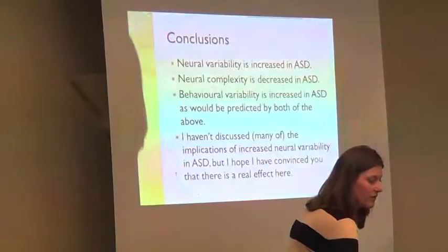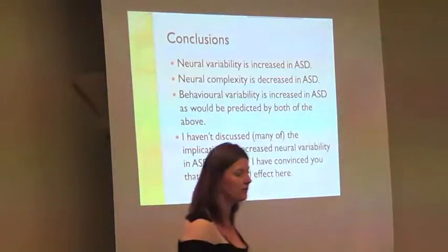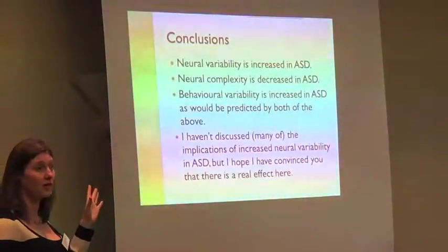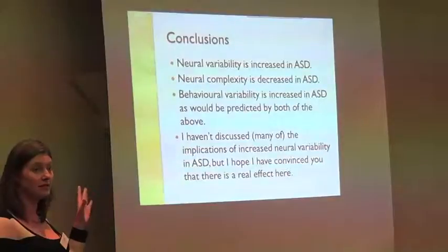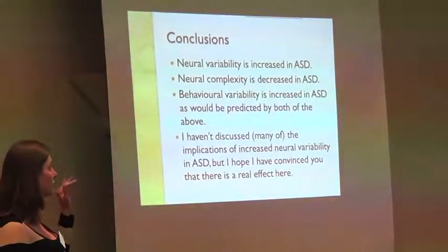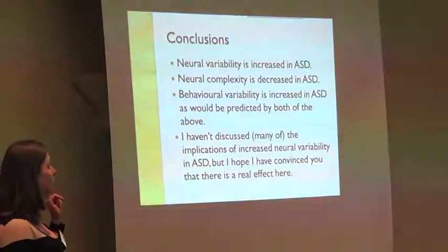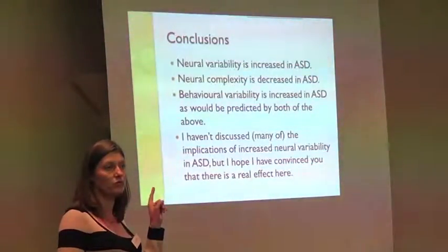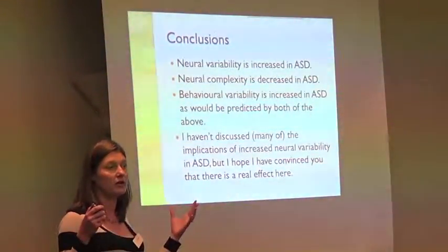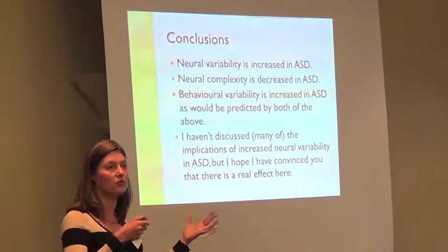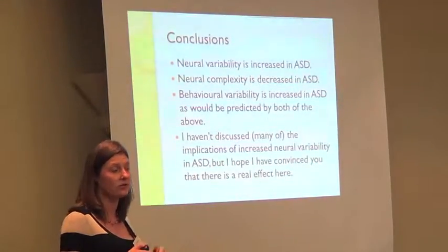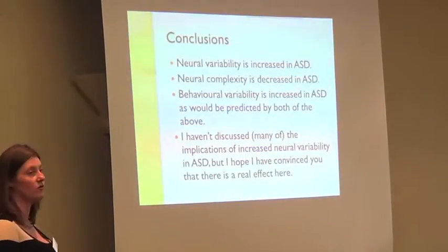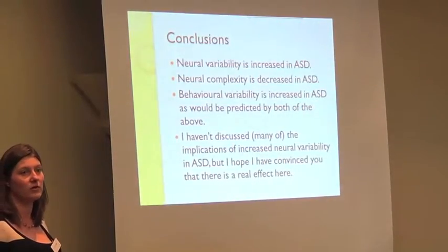My conclusions: neural variability is increased in ASD; neural complexity is decreased in ASD — based on others' work; behavioural variability is increased in ASD, and that's exactly what would be predicted by both of those statements. Although it looks inconsistent, the work from McIntosh and others is actually highly consistent. I don't discuss all the implications, but I do have confidence that there is a real effect in terms of variability.